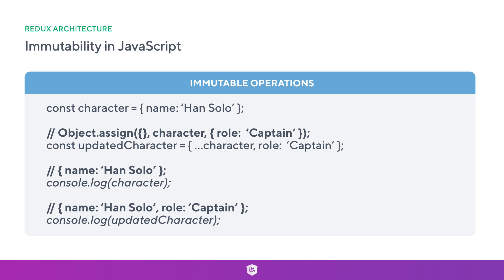Much like the toUpperCase method on a string returns a new uppercase string without affecting the original, the spread operator does the same for objects. Note that Object.assign with an empty object, the character, and a new object with a role of 'captain' is essentially equivalent to the const updatedCharacter spread operator approach. This is a TypeScript and ES6 feature which is shorthand for Object.assign that you may have seen more commonly.